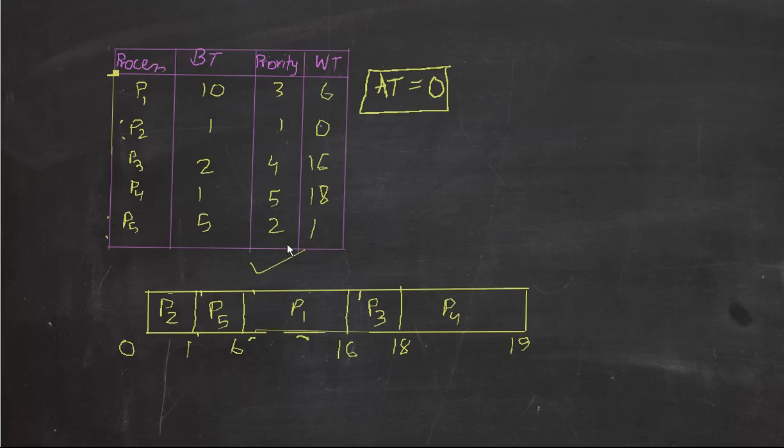Alright, so this is the waiting time, and you can find the average waiting time, it's just the sum of the waiting time divided by the number of processes. Alright, so that's about it for priority scheduling, this was another really easy algorithm, nothing to do actually.